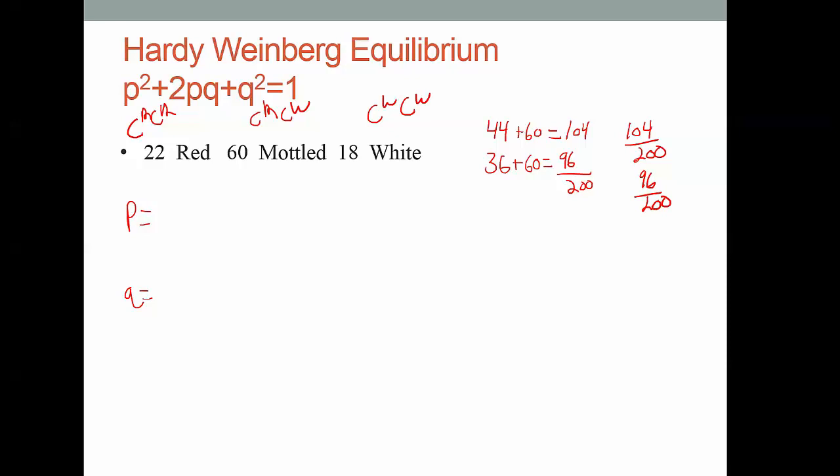Let me do that with a calculator. 104 divided by 200 gives me 0.52. And if I've done my math right, that should make this 0.48, because added together, they will equal 1, or 100% of the alleles in that population.